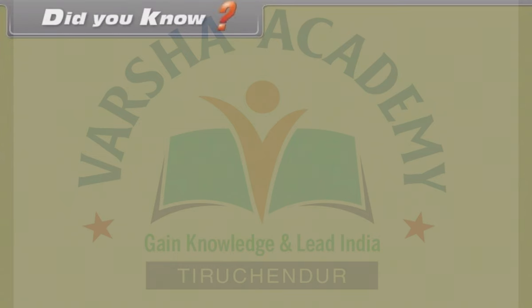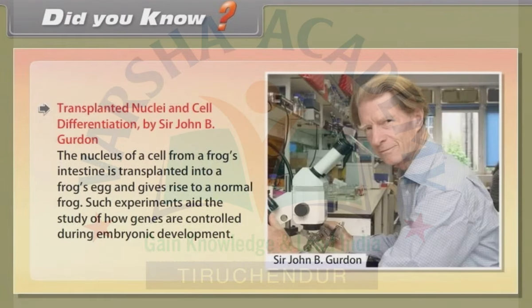Did you know: Transplanted nuclei and cell differentiation by Sir John B. Gurdon. The nucleus of a cell from a frog's intestine is transplanted into a frog's egg and gives rise to a normal frog. Such experiments aid the study of how genes are controlled during embryonic development.